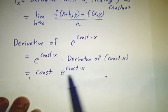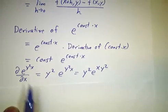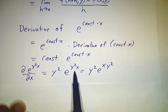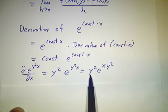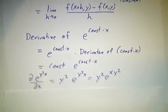And now if the constant happens to be y squared, then the derivative of y squared x is y squared times e to the y squared x. We usually write that as y squared e to the xy squared.